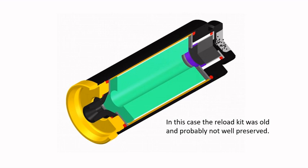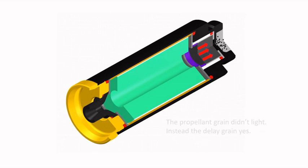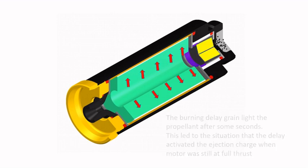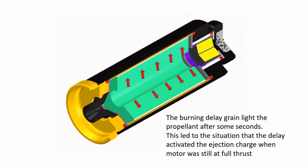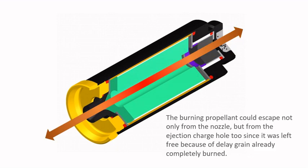In this case, the reload kit was old and probably not well preserved. The propellant grain didn't light when the igniter was activated. Instead, the delay grain did. The burning delay grain lit the propellant after some seconds. This led to the situation where the delay grain activated the ejection charge when the motor was still at full thrust.